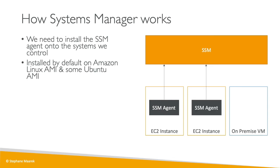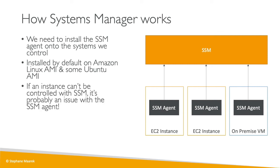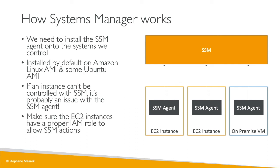Whether we have EC2 instances or on-premise VMs, we install the SSM agents and they automatically report to the SSM service. If there's a problem where the SSM agent cannot talk to SSM, it's probably an IAM issue — you may not have the proper permissions. So remember: SSM doesn't work out of the box; we need the agent installed. In the next lecture we'll launch EC2 instances and configure them correctly to see them in SSM.